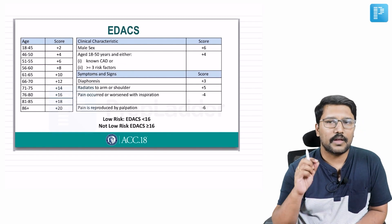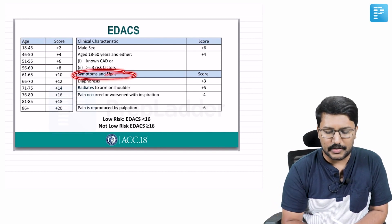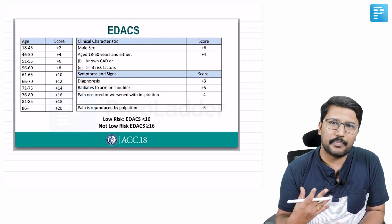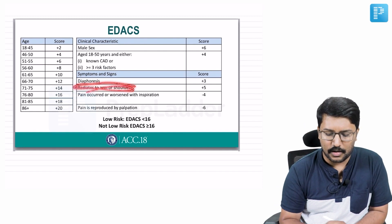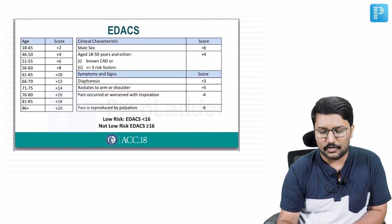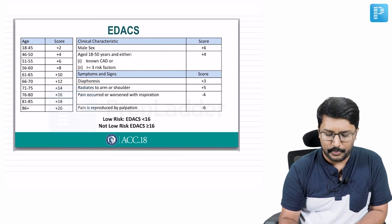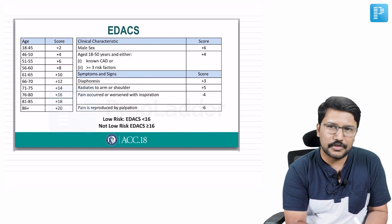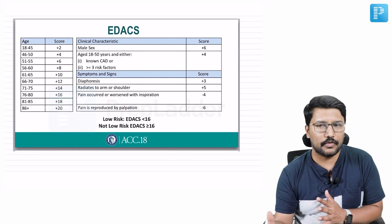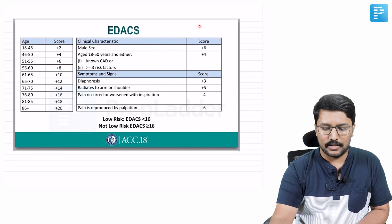EDACS score also considers risk factors — whether three or more are present — and symptoms: whether the patient is having diaphoresis, whether the pain is typical of angina radiating to arm or shoulder. Pain that occurred or worsened with inspiration suggests pleuritic chest pain, giving a negative score. Pain reproduced by palpation suggests musculoskeletal origin, also giving a negative score. A score of 16 or more indicates high likelihood of ACS; less than 16 is lower risk.